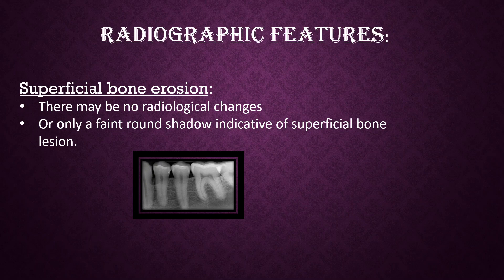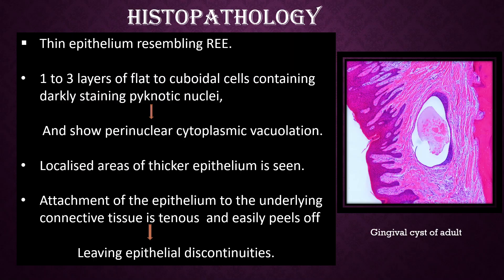Radiographic features — there may be no radiological changes, or only a faint round shadow indicative of superficial bone erosion. Histopathology of gingival cysts of adults — these are thin epithelium resembling reduced enamel epithelium, 1–3 layers of flat to cuboidal cells containing darkly staining pyknotic nuclei, and show perinuclear cytoplasmic vacuolation. Localized areas of thicker epithelium are seen. Attachment of the epithelium to the underlying connective tissue is thin and easily peels off, leaving epithelial discontinuities.